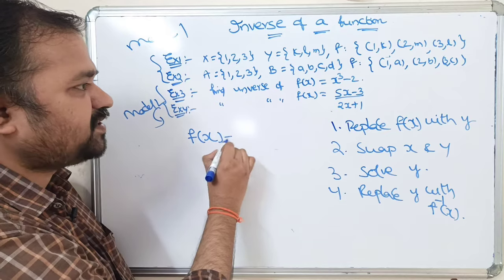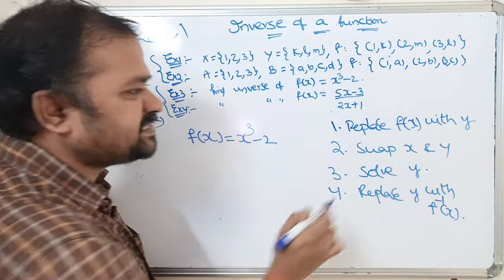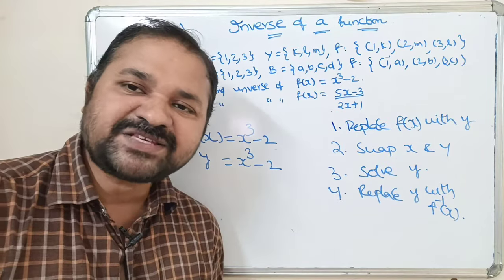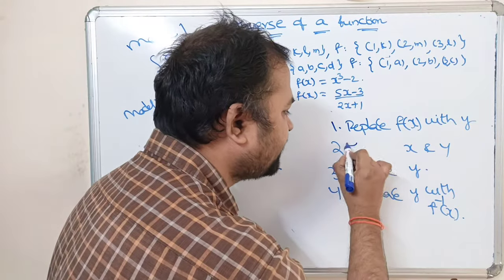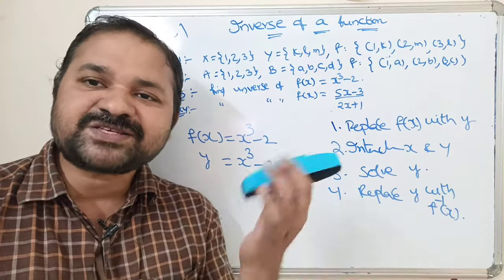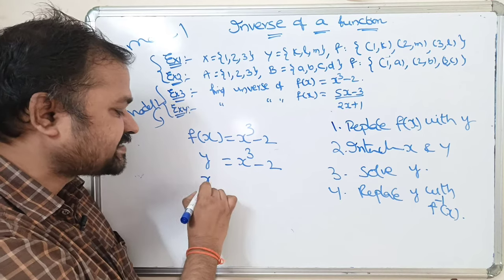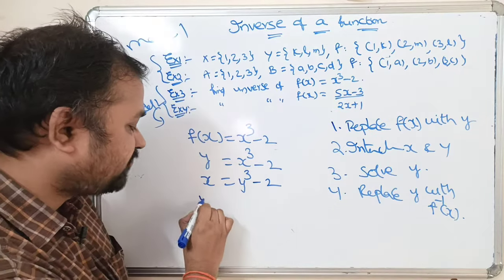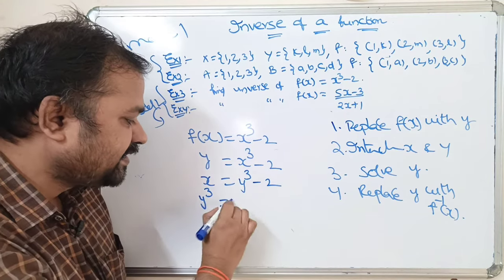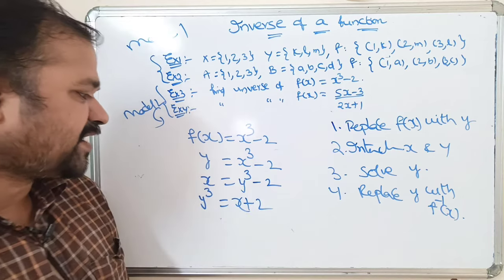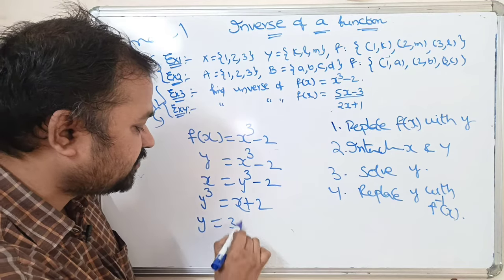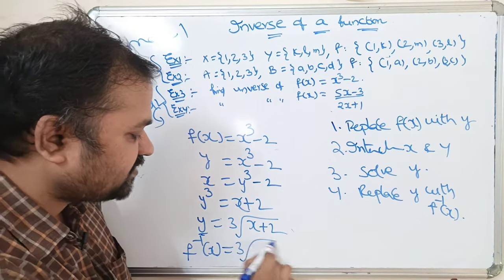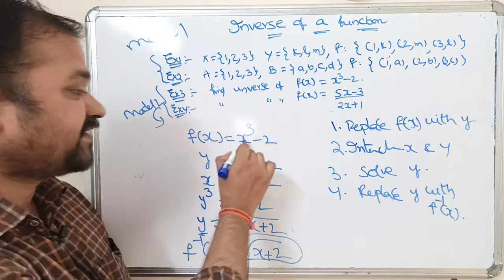Example 3: f(x) = x³ - 2. Step 1: replace f(x) with y, giving y = x³ - 2. Step 2: interchange x and y, giving x = y³ - 2. Step 3: solve for y — y³ = x + 2, so y = ∛(x + 2). Step 4: replace y with f inverse of x, giving f⁻¹(x) = ∛(x + 2).